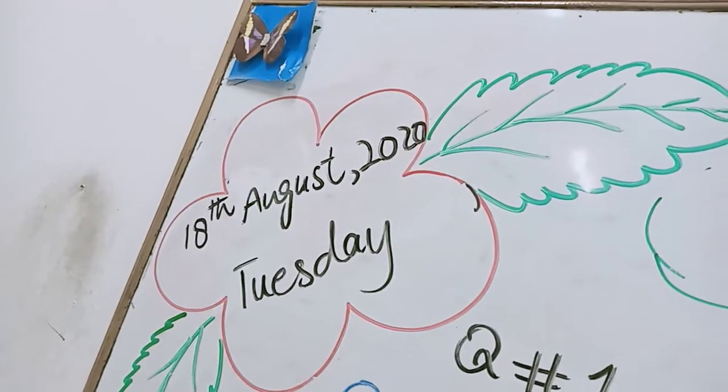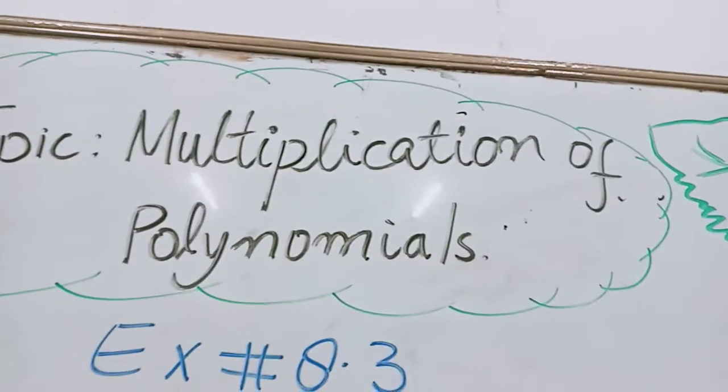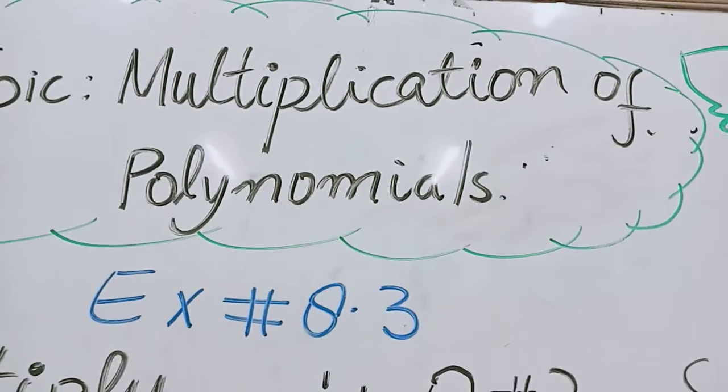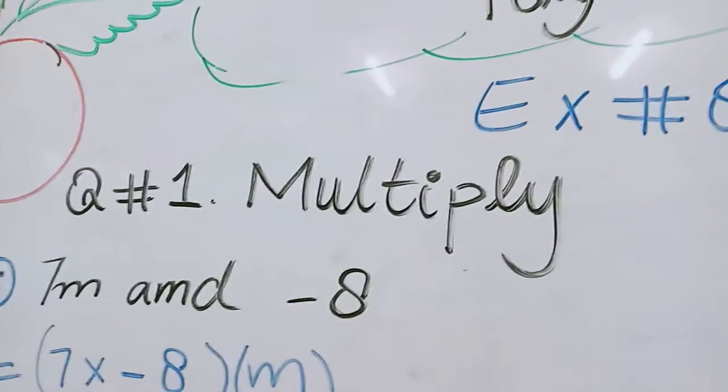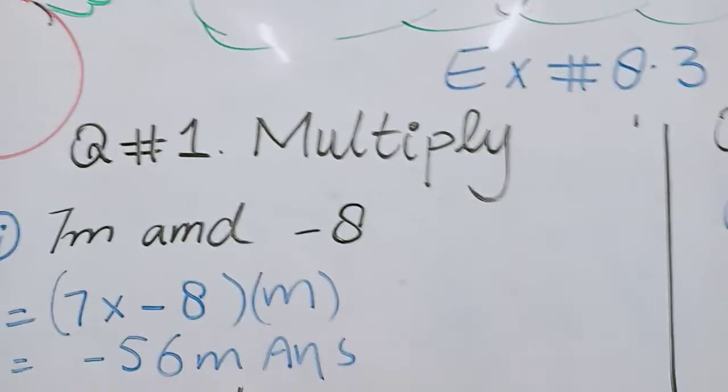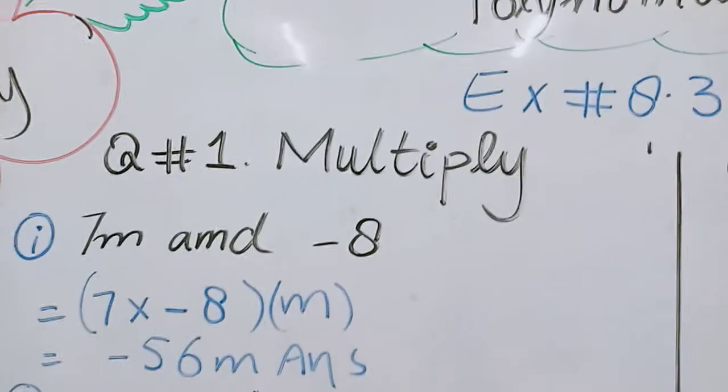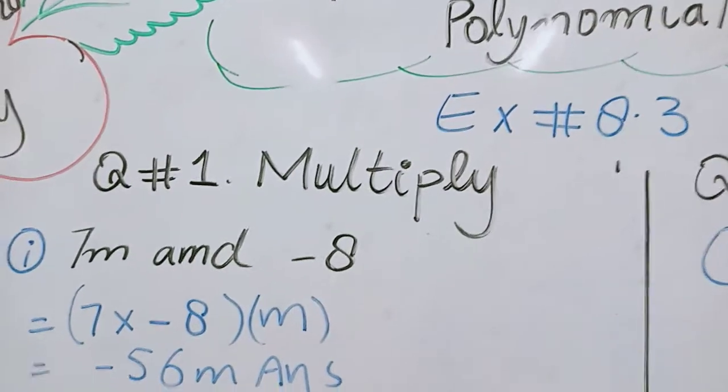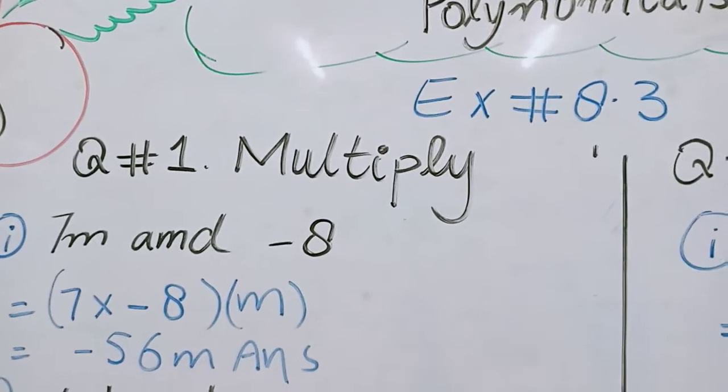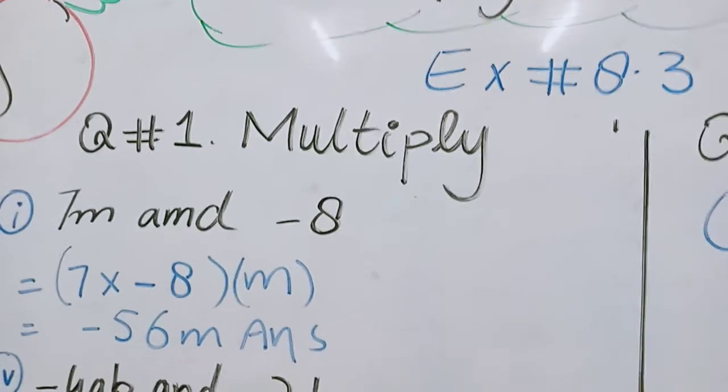Today is 18th August 2020 and it is Tuesday. So students, today's topic is multiplication of polynomials. Exercise is 8.3 and question number 1 is multiply. In question number 1 we have to multiply the 2 polynomials. Students, we have already learnt about the polynomials, binomials.